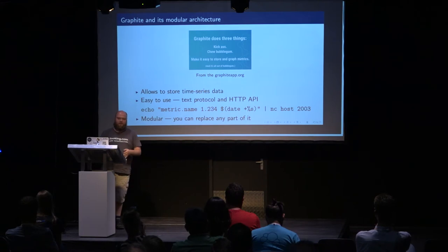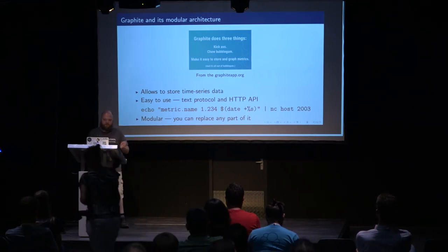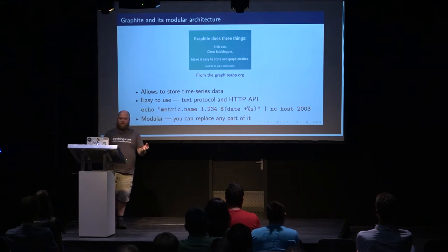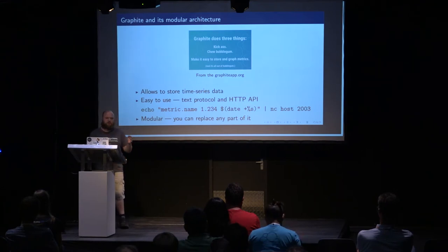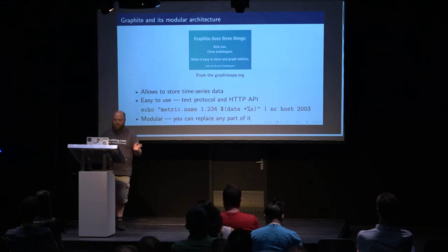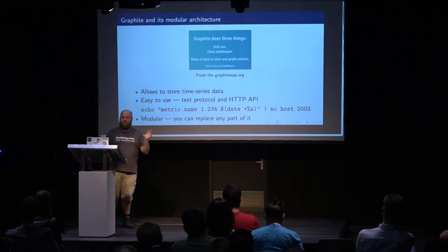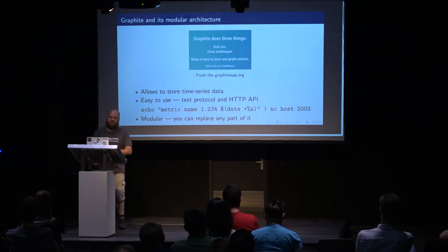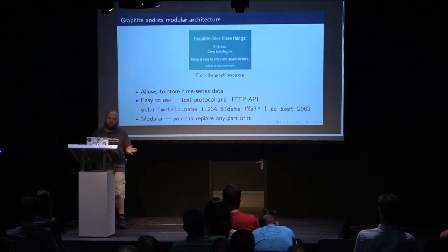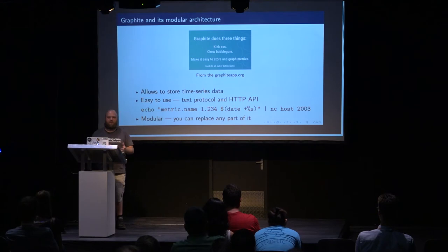How is Graphite related to that? Graphite is basically a system — on the official website it's described as something that can make it easy to store and graph metrics. It's a set of several pieces of software that allows you to store time series data, data that comes in even portions over time. You have a very simple protocol: to send data you can just echo name, value, date and send it over the network to the storage. It also has a very simple HTTP API to query that data. The system is modular — it consists of several small components which you can replace or combine in any way you want.